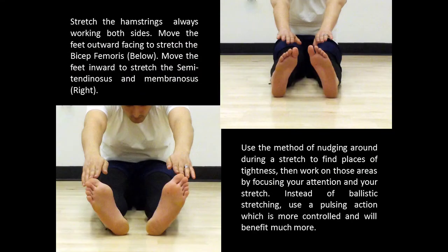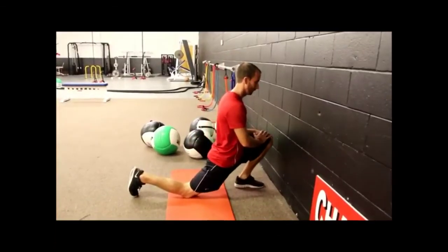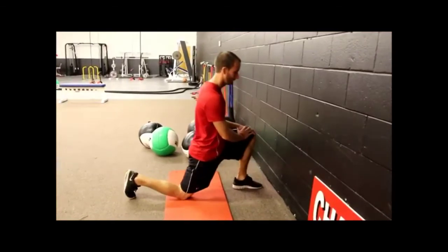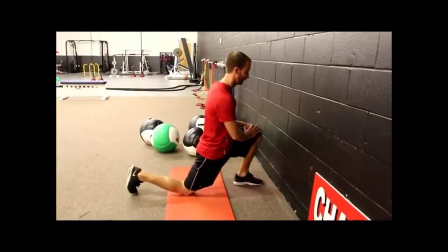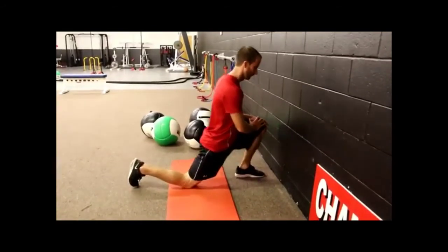Stretch the hamstrings, always working both sides. Move the feet outward facing to stretch the bicep femoris. Move the feet inward to stretch the semitendinosus and membranosus. These two are smaller muscles that work synergistically. Use the method of nudging around during a stretch to find places of tightness, then work on those areas by focusing your attention and your stretch. Instead of ballistic stretching, use a pulsing action which is more controlled and will benefit much more.